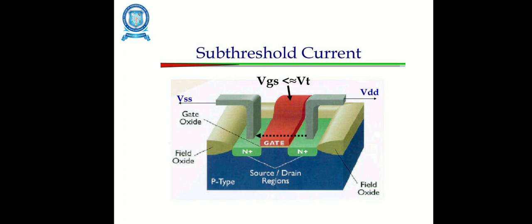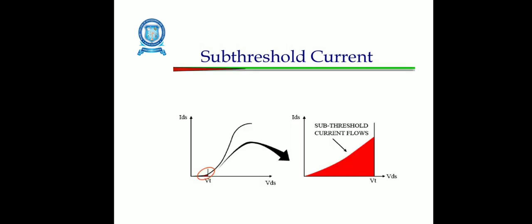In subthreshold leakage, you can reduce the supply voltage by lowering the supply voltage which effectively reduces power consumption. Whenever we reduce the supply voltage by a factor, it can result in a four-fold reduction in power consumption. Reducing the supply voltage also impacts performance, which can be mitigated by scaling down the threshold voltage.